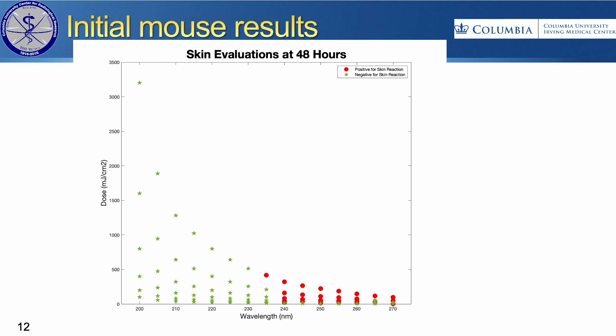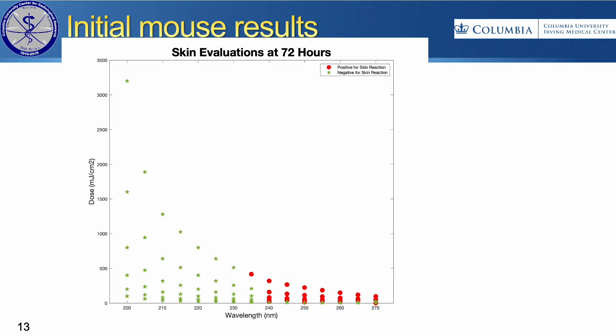I put it on a log scale so you can see the exposure scenario a lot better. Some of our exposures were a couple thousand millijoules per centimeter squared when they were less than 210 nanometers. Importantly in this graph, you can see there's a pretty steady reaction up to about 240 nanometers, and then just a great increase in dose required to see erythema. Also included is the previous TLV as the red line, and the current eye limit in green and the current skin limit in blue.